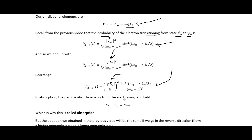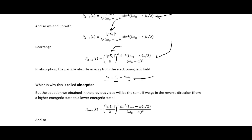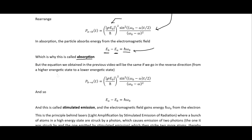In absorption, the particle absorbs energy from the electromagnetic field. We are going from a lower energy state a to a higher energy state b, and the amount of energy absorbed is h-bar times the frequency of the electromagnetic radiation that has been absorbed. That is why we call this absorption.